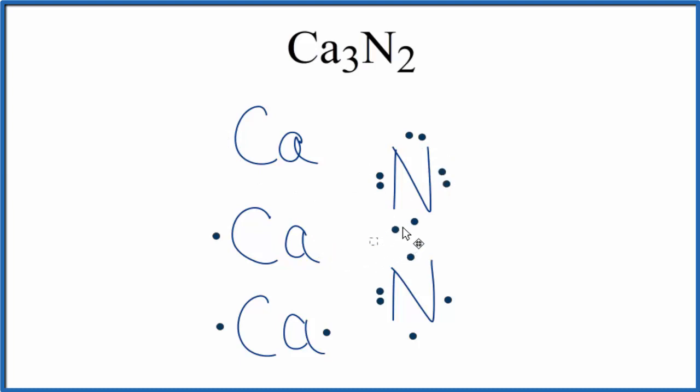So we have to take one here. So now this nitrogen has an octet. Then these electrons, they go here to form an octet around this nitrogen. So you can see why we need three calcium atoms for these two nitrogen atoms.